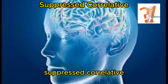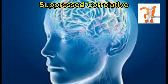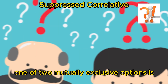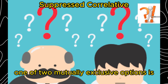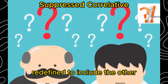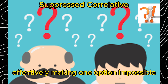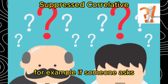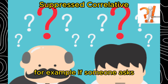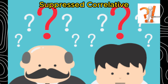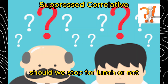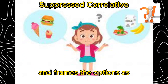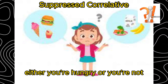Suppressed correlative. A suppressed correlative occurs when one of two mutually exclusive options is redefined to include the other, effectively making one option impossible. For example, if someone asks, should we stop for lunch or not, and frames the options as: either you're hungry or you're not.